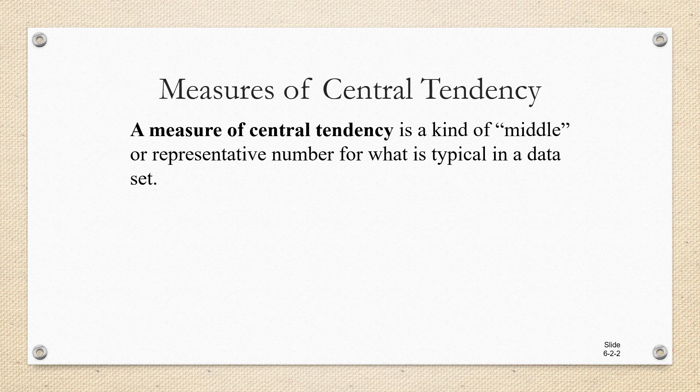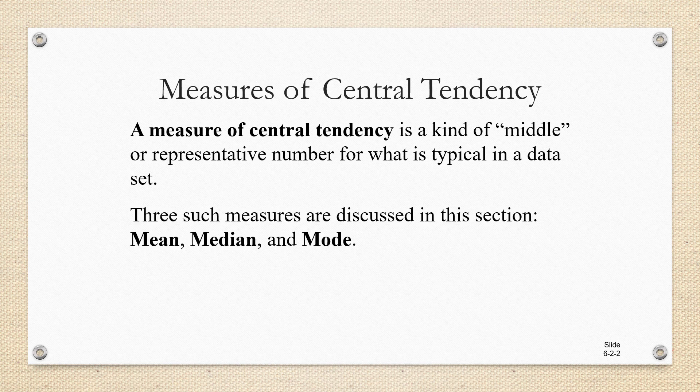A measure of central tendency is a kind of middle or representative number for what is typical in a data set. Three such measures are mean, median, and mode, and we're going to discuss one of these in this video.